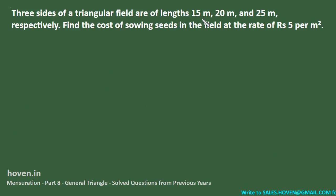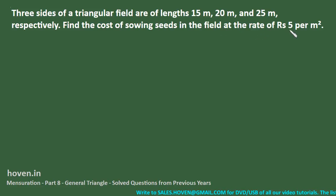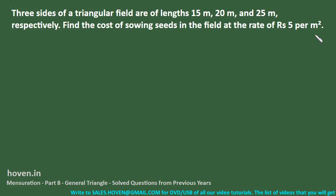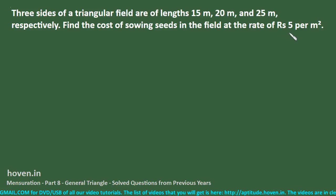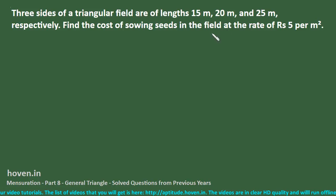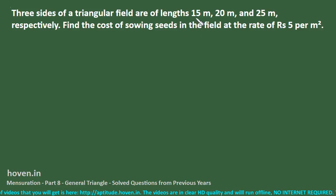Three sides of a triangular field are 15, 20, and 25. Find the cost of sowing seeds in the field at the rate of Rs. 5 per square meter. The requirement is to first find the area of the triangular field, then obtain the cost.